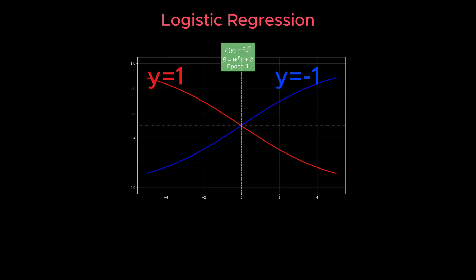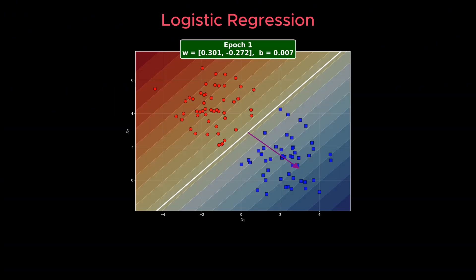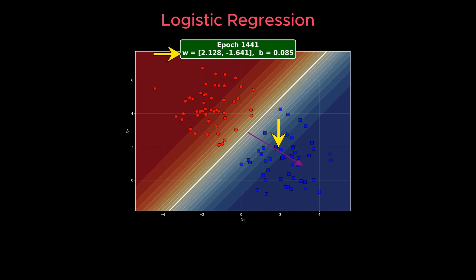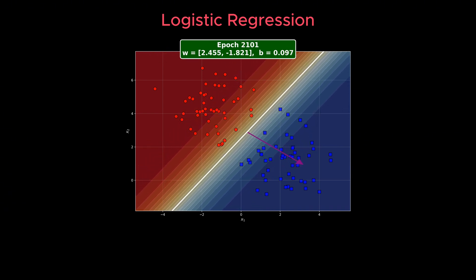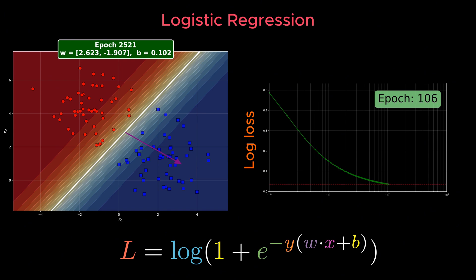Now let's review logistic regression. In logistic regression, we again model the probability of a data point belonging to a class using the same equation. But instead of focusing on maximizing the margin, logistic regression tries to adjust its parameters, W, so that the predicted probabilities are as close as possible to the true labels. It does this by minimizing the log loss. This loss is smooth and differentiable, which makes it very suitable for gradient-based optimization methods like gradient descent.